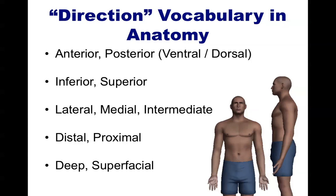I should point out that anterior and posterior in humans have the same meaning as ventral and dorsal. However, this is not true for other animals. Let's take each of these pairs of terms and look at what directions they describe on the human body in the anatomical position.